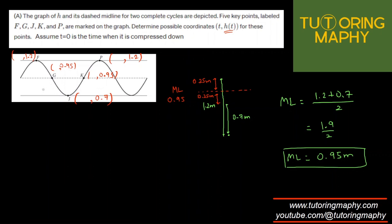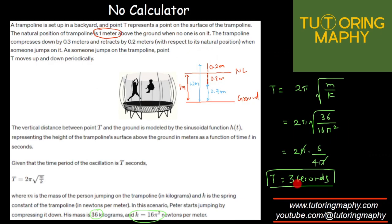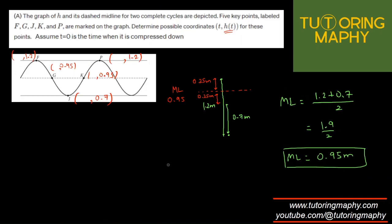So now we have to find the time. At t equal to 0, where is the trampoline? It is compressed down. This could have been t equal to 0, but we cannot consider it, otherwise these positions will become negative time, which is impractical. What is the next time the trampoline will be here? Obviously, after one time period, which was 3 seconds.